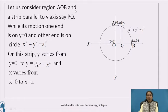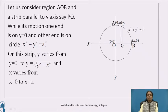Consider the region O-A-B in the first quadrant. To get its limits, consider a strip parallel to the y-axis, PQ. The lower end is on the x-axis, which represents y = 0, and the other end is on the circle x² + y² = a². On this strip, y varies from y = 0 to y = √(a² - x²), taking the positive value since we are in the positive quadrant. And x has constant limits from x = 0 to x = a.